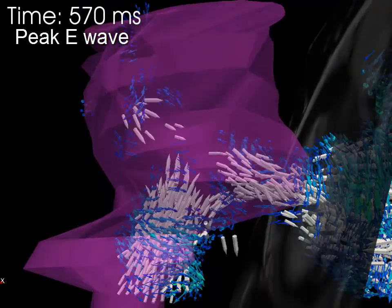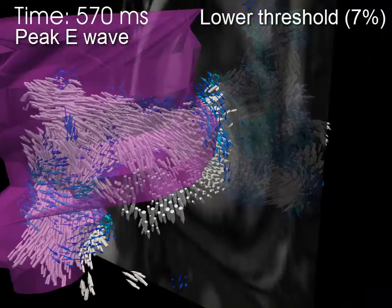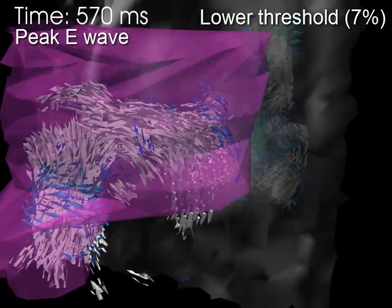Next, we lower the threshold for velocity so that smaller velocity vectors can be seen.